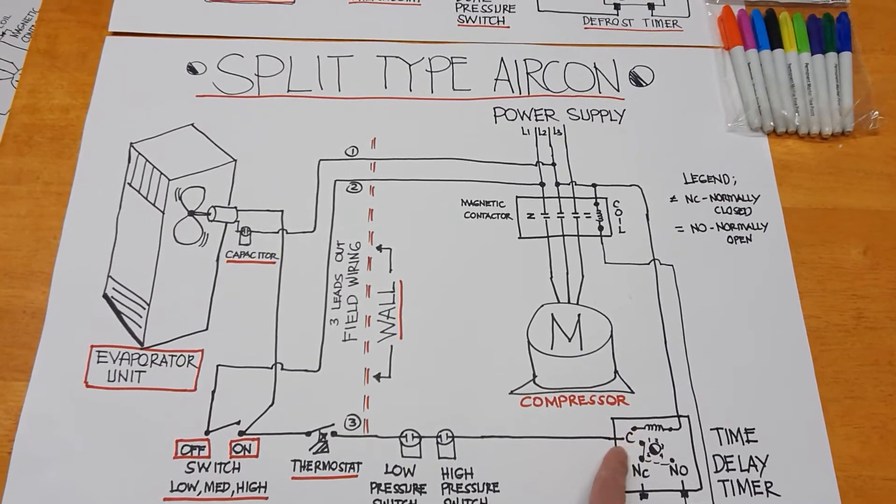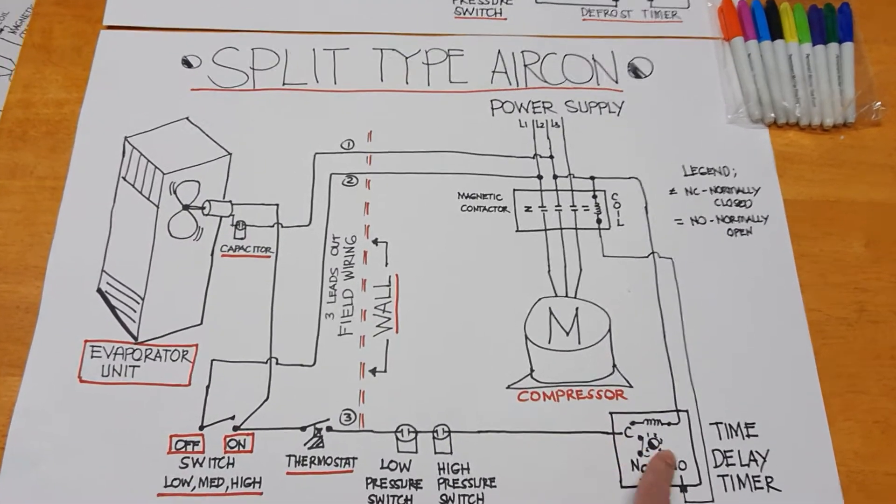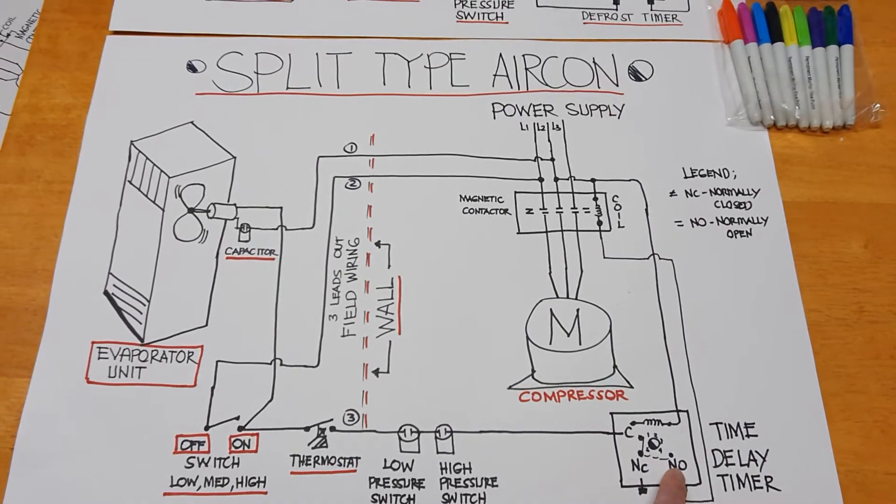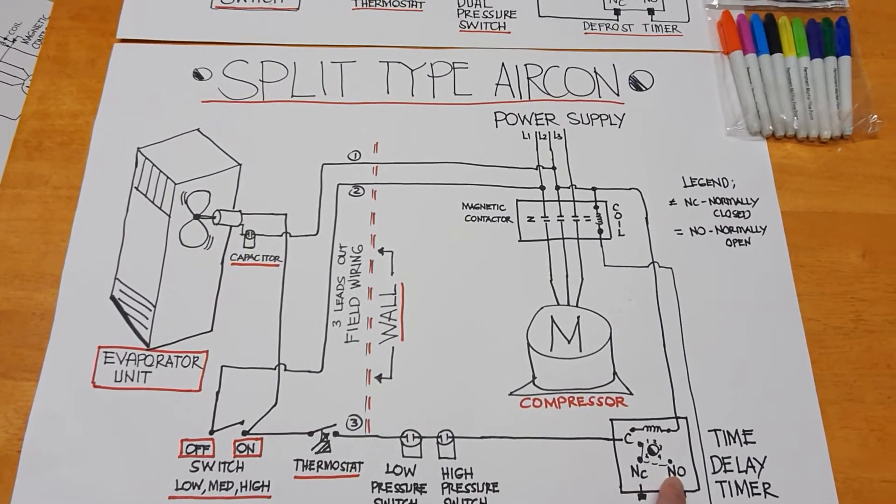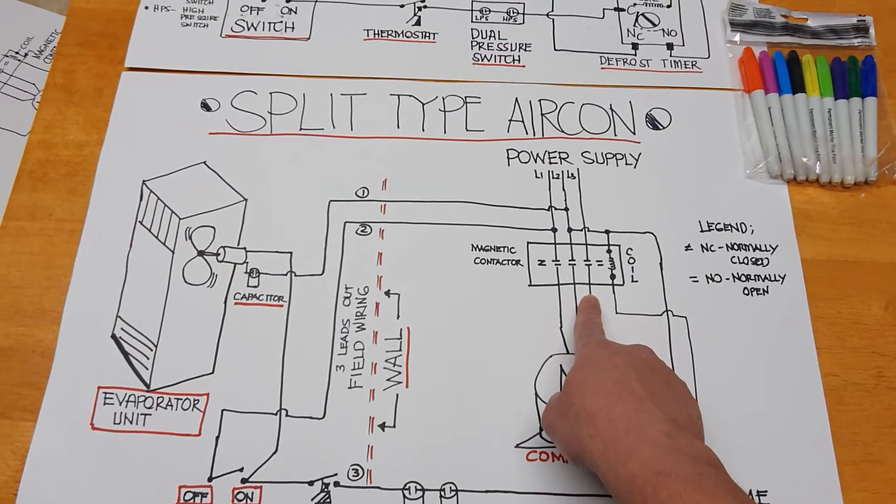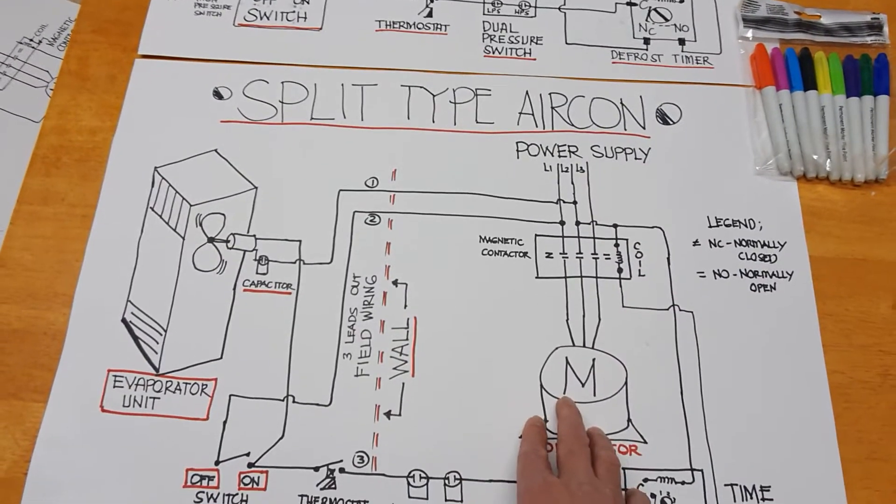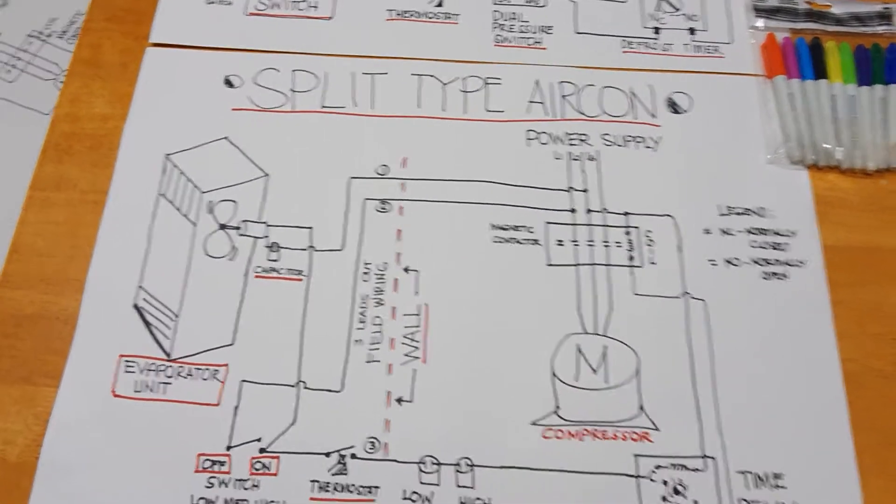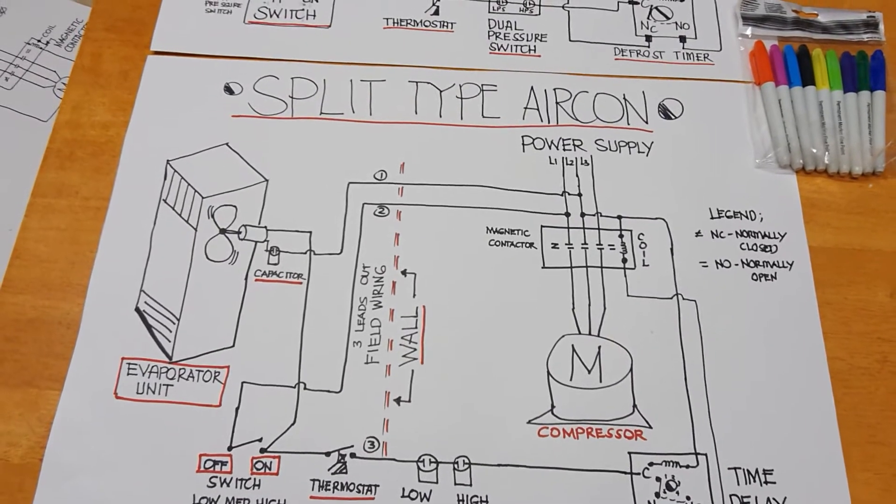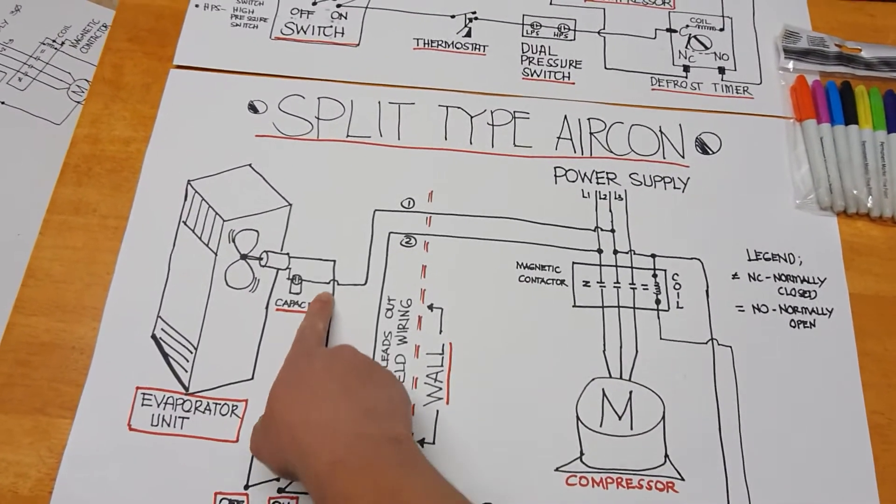So the current will change the flow and go to the coil, so the compressor will turn on at this moment. So this is as well the evaporator unit.